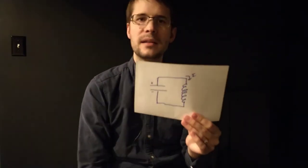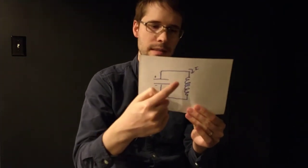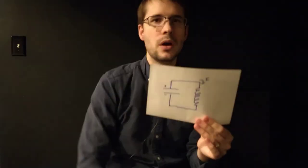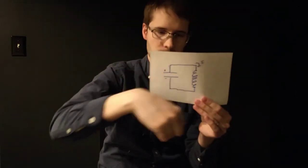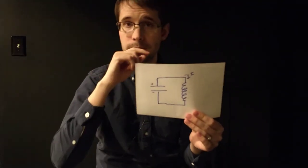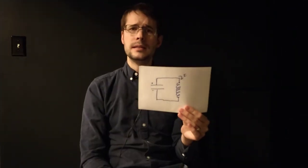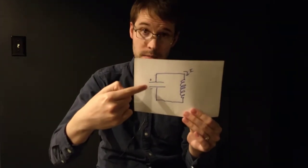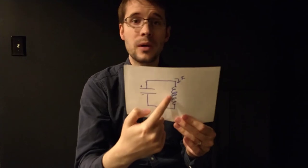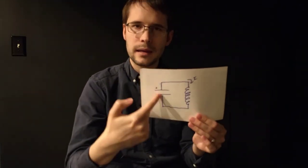What happens next is the current starts to decrease, but the inductor says no — you can't just stop. It keeps pushing the charge through, and then we get a buildup of charge on the bottom plate — positive charge on one side, negative on the other. We're starting to see simple harmonic motion, because now the bottom plate is positively charged and the top plate is negatively charged, it's going to push charge back through. And we get this oscillation of charge back and forth.